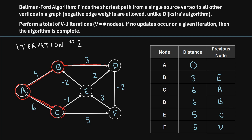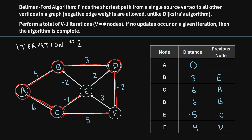Moving on to node C. C to E: six minus one is five — not smaller than five, so no update. C to F: six plus five is eleven — not shorter than five, so no update. Moving on to node D. D to F: D now has a distance of six, so six minus two is four. Four is smaller than five, so we update F to four. The previous node for F remains D.